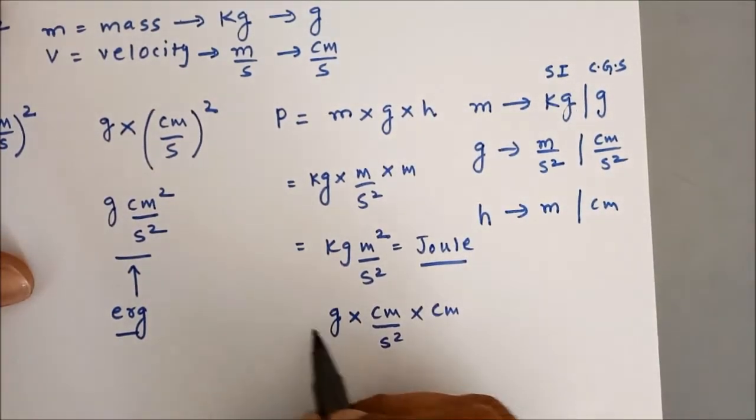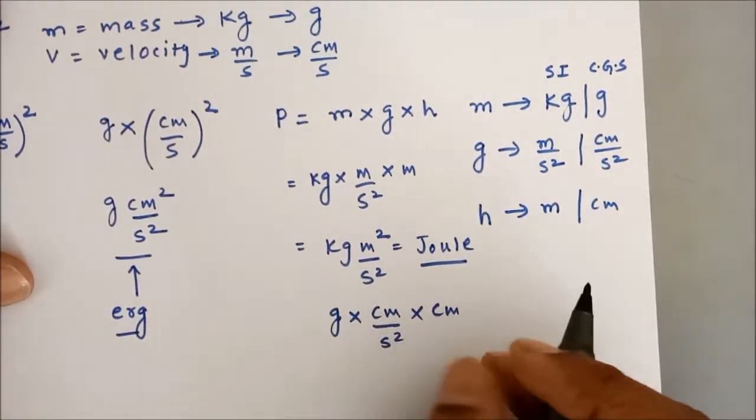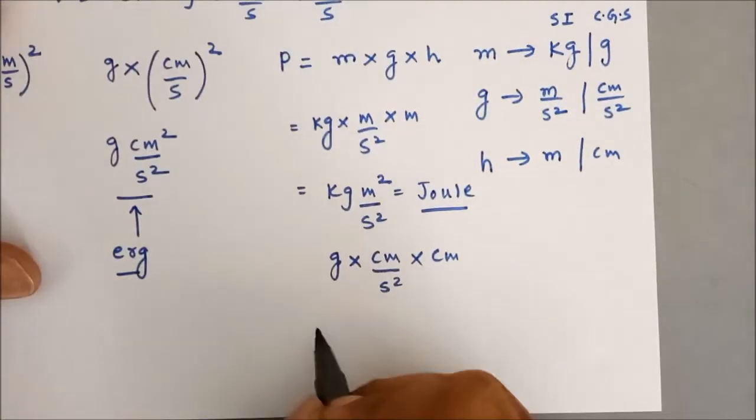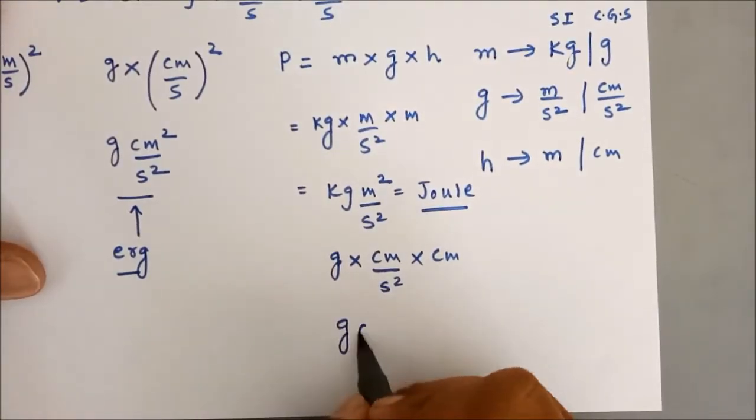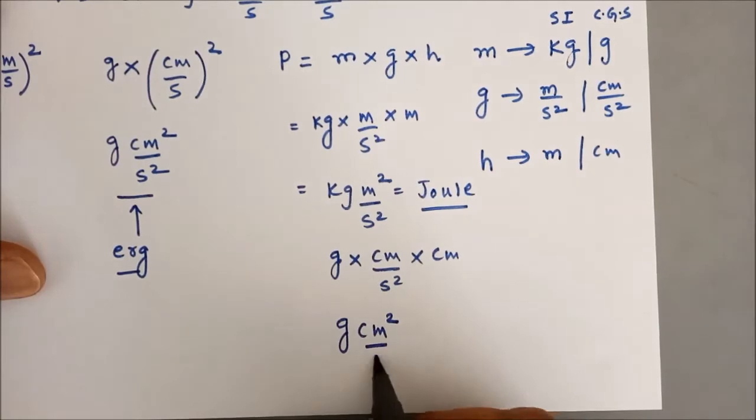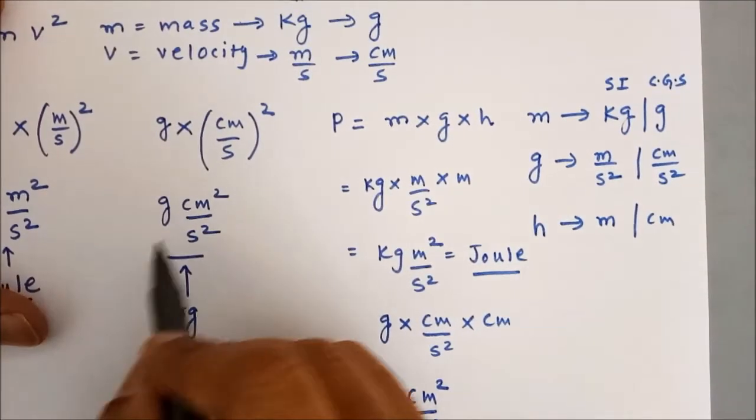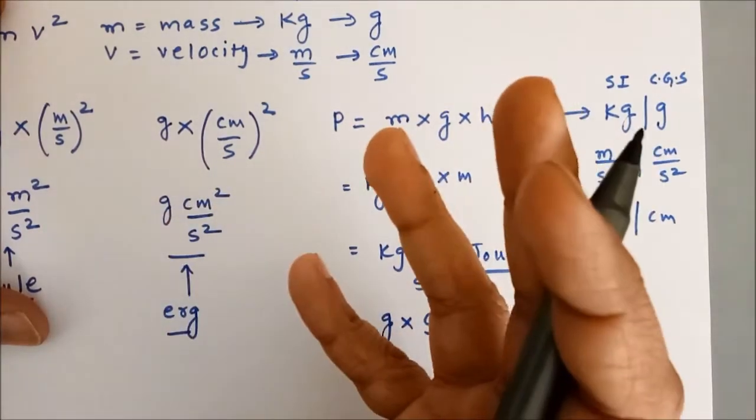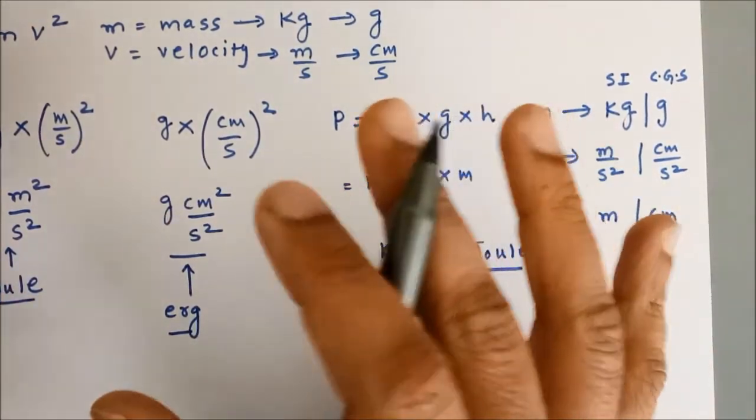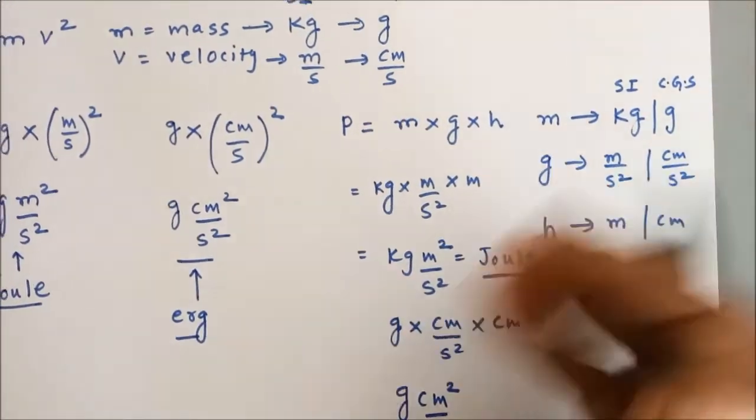So, again centimeter into centimeter centimeter square. So, it would be gram centimeter square upon second square. This is nothing but erg that we have already derived over here. So, whatever energy it is, the unit of energy always remains the same that is Joule.